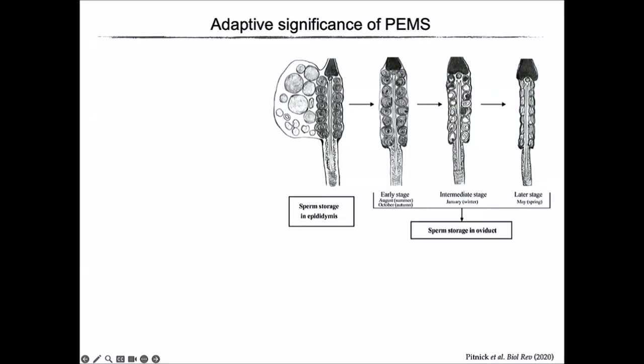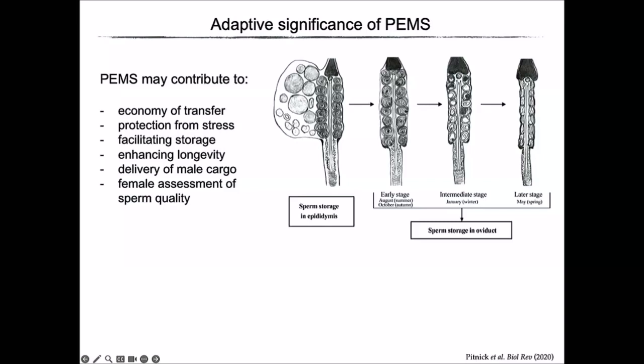Another example highlights sperm changes over prolonged storage in a turtle species. You can see morphological changes over several months of sperm storage in the oviduct — structures reducing in size. We know very little about the functional significance, whether this contributes to sperm energetics or motility, or the extent to which females play a role in these changes. Nonetheless, it highlights that sperm spend a prolonged period within the female reproductive tract — the critical selective environment in which they need to function.